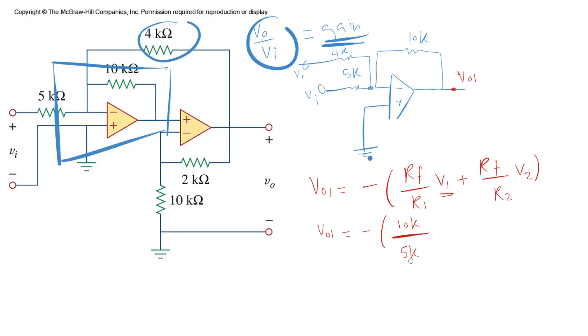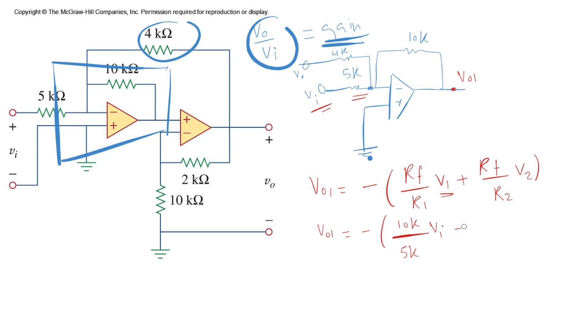And then what is V1? Since we choose 5k to be the first resistor, then let's see what is the voltage here. Vi, right? And then RF is still the same, 10k over R2, the other resistor, 4k. What is V2? What is the 4k resistor connected to? Vout here, right? 4k is connected to Vout.